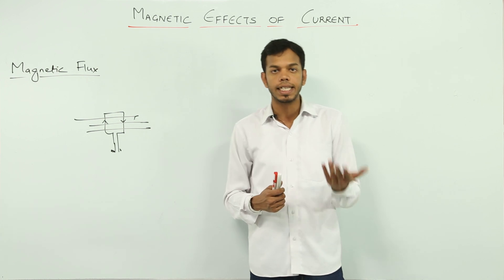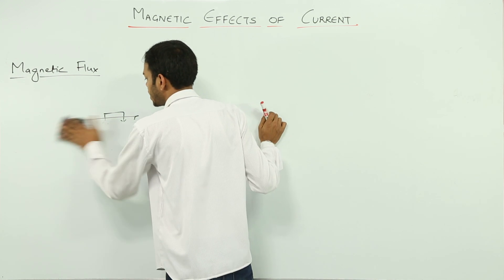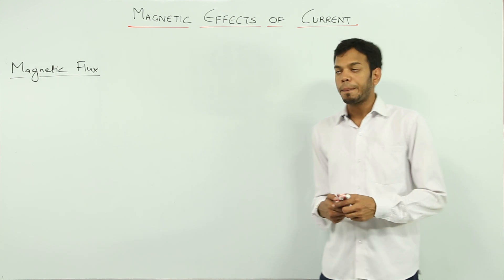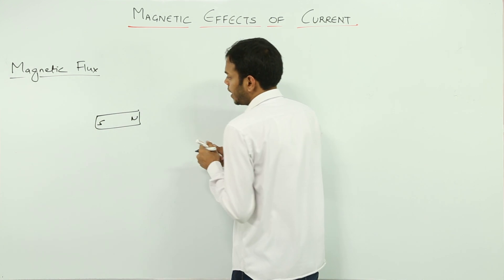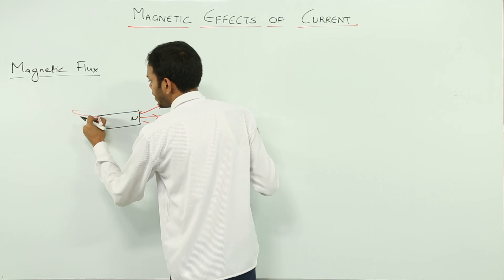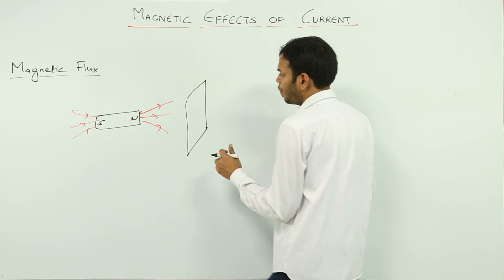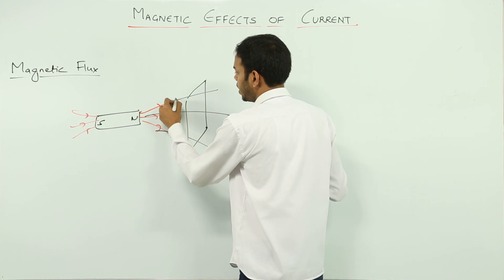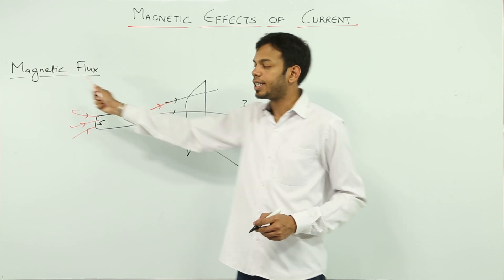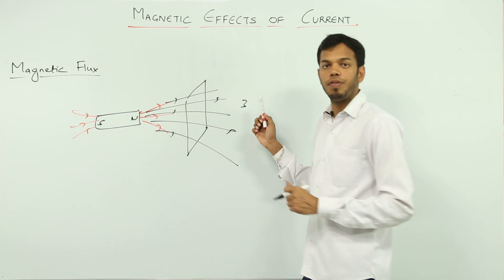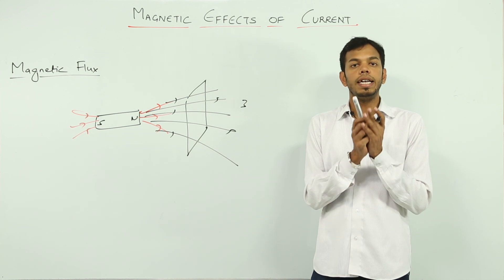A generator is a device which generates electricity. To understand the whole concept, we'll walk through magnetic flux and electromagnetic induction. Magnetic flux is a simple concept — suppose this is a magnet with magnetic lines of force coming out of it. If I take any random area in front of this magnet through which three magnetic lines of force are passing, then the magnetic flux equals three. If five lines pass, flux is five. Magnetic flux is the number of magnetic lines of force passing through a defined area.